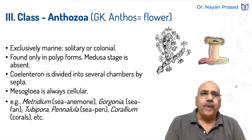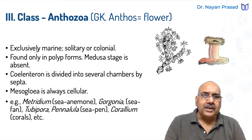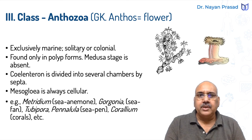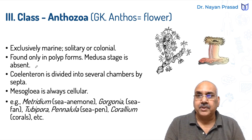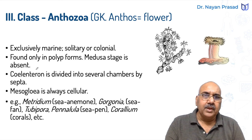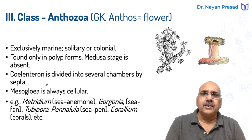Another class in Phylum Cylentata is Anthozoa. The term comes from Greek language in which 'anthos' means flower, so these appear like flowers. In this group also, members are exclusively marine — solitary or colonial, some living singly, some in groups, like corals which are colonial. These are found in polyp form; medusoid stage is absent. The coelenteron is divided into several chambers by septa, with different partition walls.